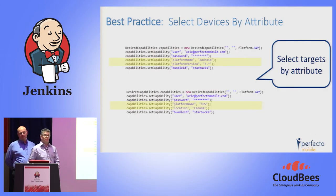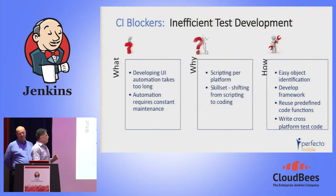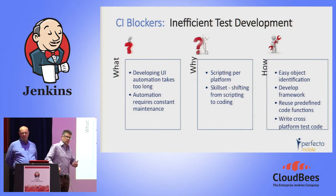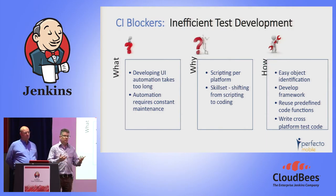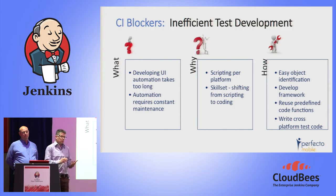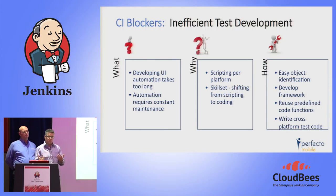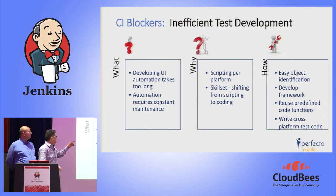Another CI blocker: developing UI automation takes too long. Different platforms result in different user experiences — sometimes developers implement the UI on Android differently than on iOS. From a testing perspective this becomes a challenge, as you need testing to run across platforms. It takes time, and you need the ability to test across platforms when the UI is changing in short iterations.